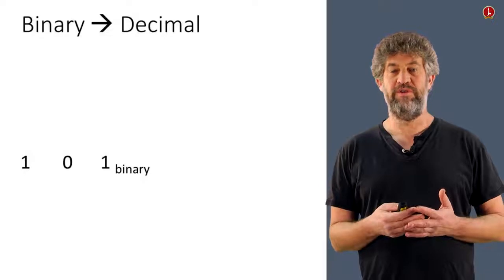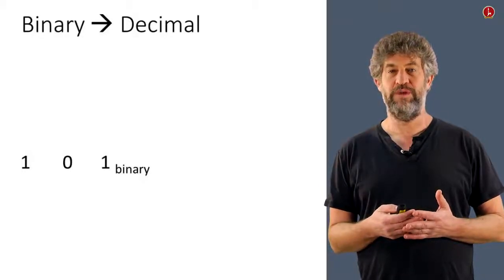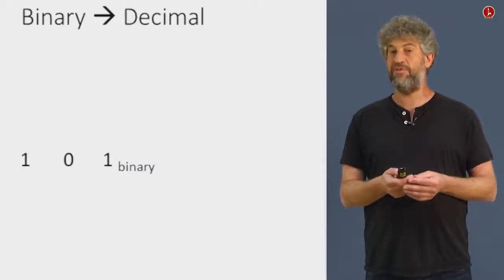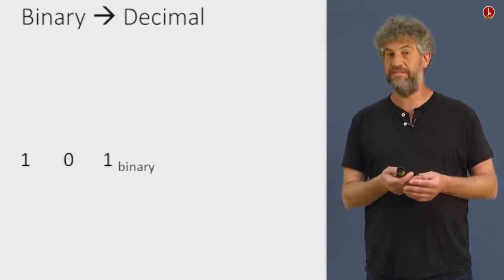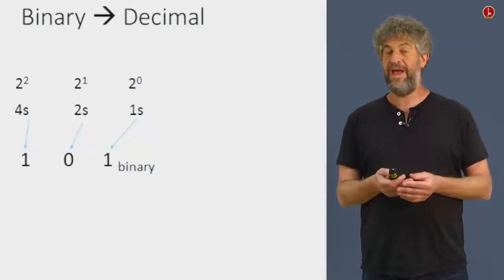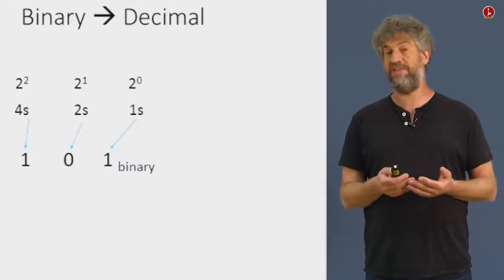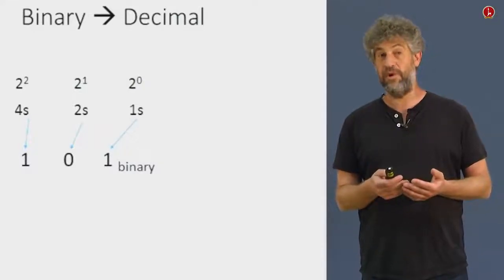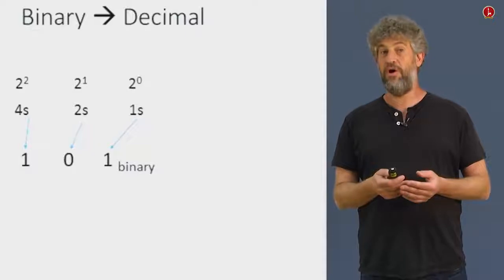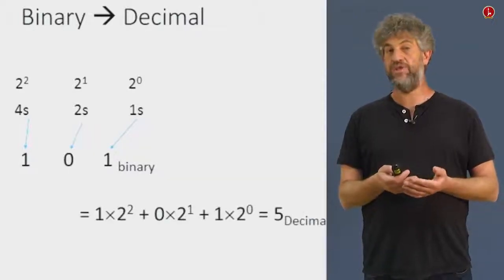Suppose you want to know, for example, what is the value of 101 in binary notation. Well, we know the rightmost bit is basically the ones. The next one, the zero, corresponds to twos. And the third, the leftmost bit here, is the fours. All together, we have 4 plus 2 times 0 plus 1 times 1. All together, that's 5. So our number is 5.